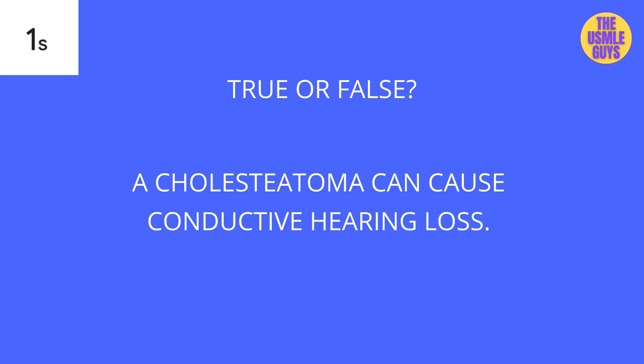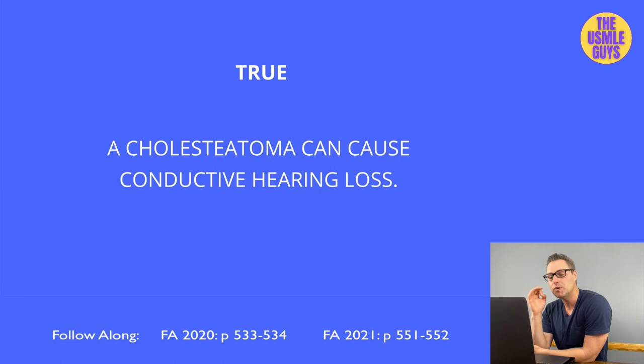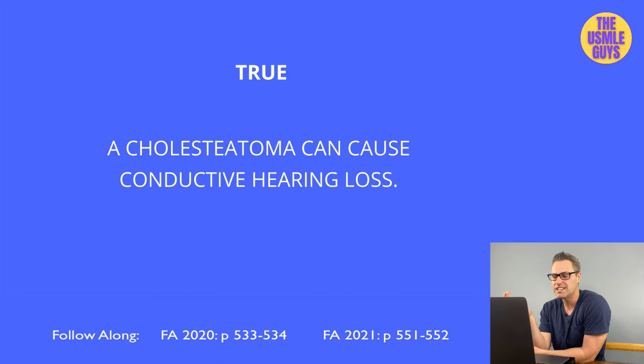This is true. A cholesteatoma is a lesion that develops from overgrowth of desquamated keratin debris in the middle ear space. It typically presents with painless otorrhea and can lead to conductive hearing loss. It can be congenital or secondary to recurrent otitis media. Symptoms can include ear pain, dizziness, vertigo, tinnitus, and a sensation of fullness in the ear.